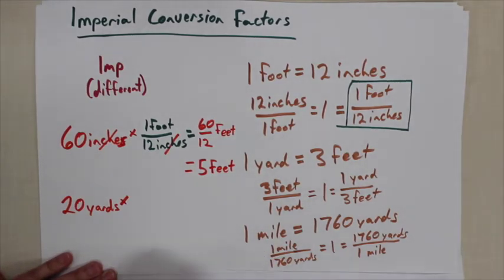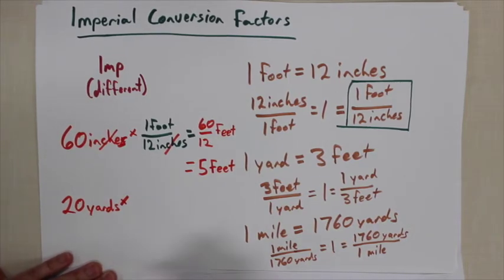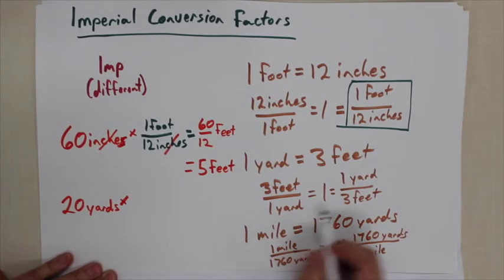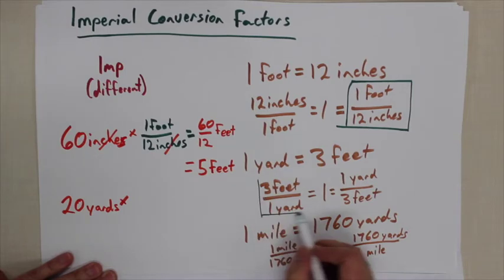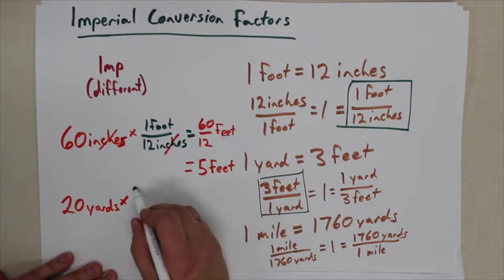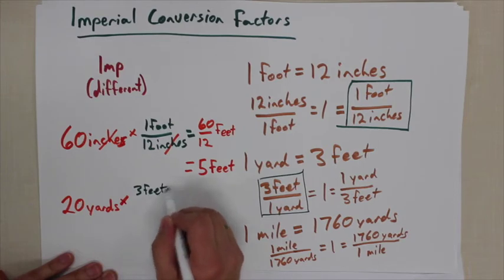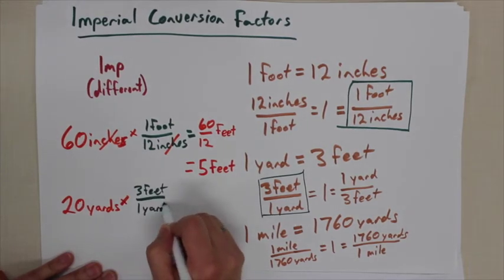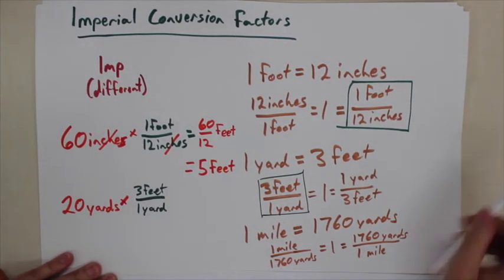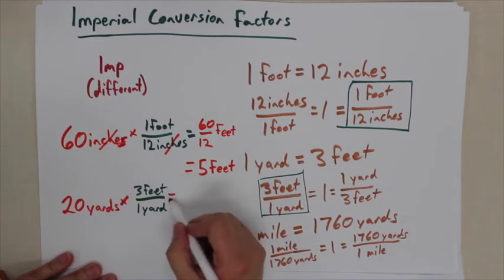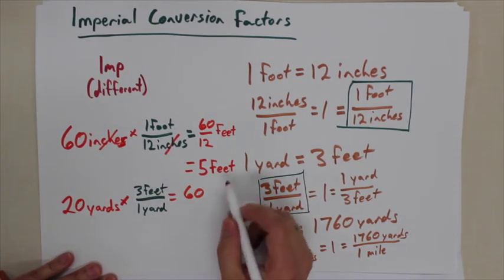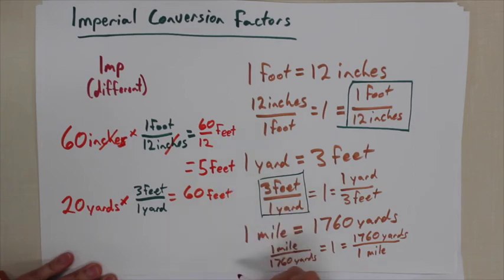Let's say I have 20 yards between my house and my friend's house and I want to run an extension cord. Using the conversion factor of 3 feet for every 1 yard, 20 times 3 equals 60 feet of extension cord needed.